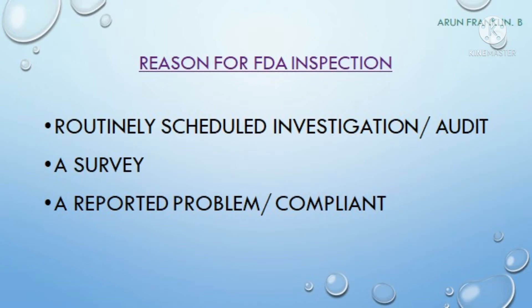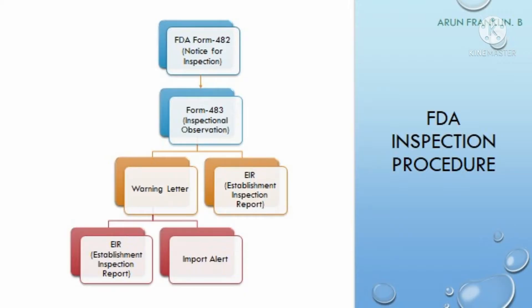Let me tell you about the reason behind the FDA inspection or FDA audit. If a company is said to be an FDA-approved company, those companies will market their pharmaceutical medicines across the United States of America. The FDA wants to inspect the manufacturing facility either for scheduled routine audits, for a survey, or whenever the FDA receives any complaint or problems related to products. In those cases, the FDA will definitely come for an audit or inspection of the facility and the procedures.